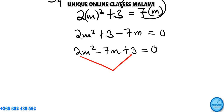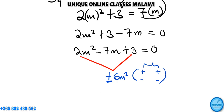This one is factorizable, so we're going to solve using the factorization method. The product is 2 times 3 which is 6, and the pair of factors must add to negative seven. So the factors are negative one and negative six, since they multiply to positive six and add to negative seven.